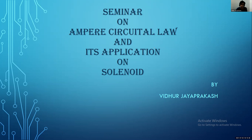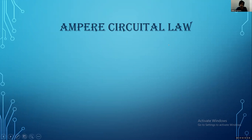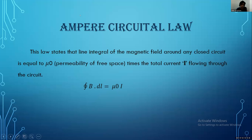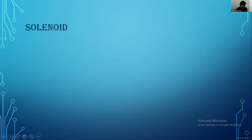Good afternoon to all. Today I'm going to take a seminar on Ampere's Circuital Law and its applications on solenoid. Ampere's Circuital Law states that the line integral of magnetic field around any closed circuit is equal to mu zero times the total current I flowing through the circuit. The equation is: closed integral of B dot dL is equal to mu zero I, where mu zero is the permeability of free space and I is the current.